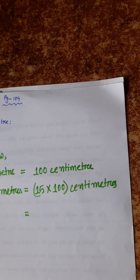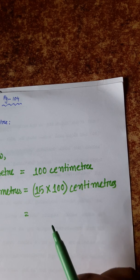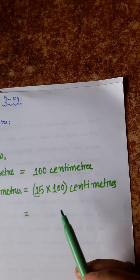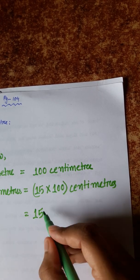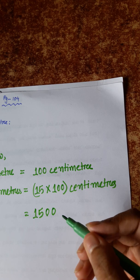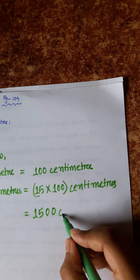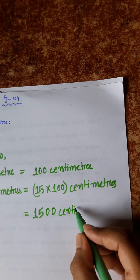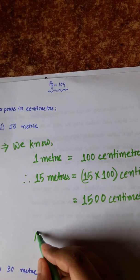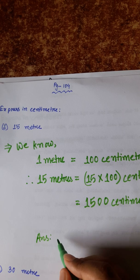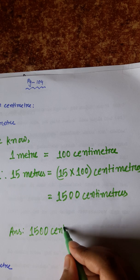When we multiply by 100, which has two zeros, we just write the multiplicand and add the zeros behind it. This is the answer: 1500 centimeters.